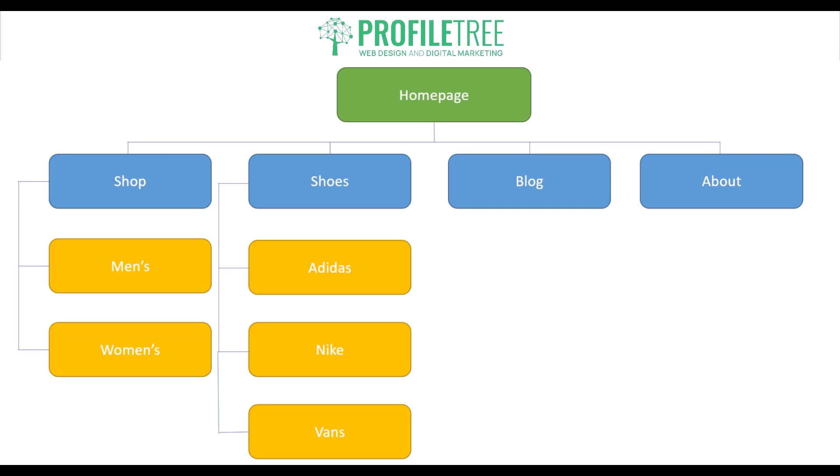Wireframes can be created using various tools — from pen and paper, as we've seen, to digital design software. Some people also create a general site structure. For example, this could be a fashion clothing store: you have the homepage connecting to sub-pages like shop, shoes, blog, and about — with further sub-pages like men's and women's, or shoe brands like Adidas, Nike, and Vans. That's a very simple base structure of a wireframe, but of course you also need to add layout designs on top.